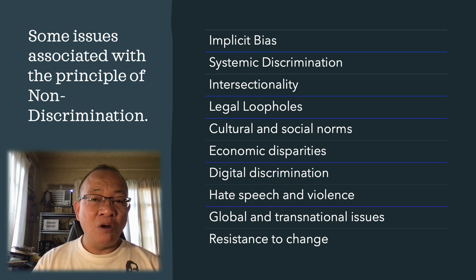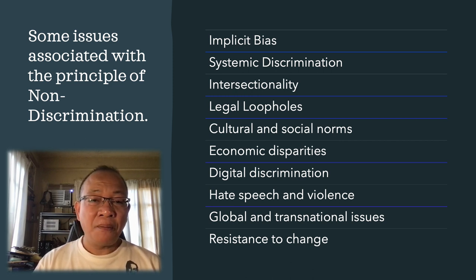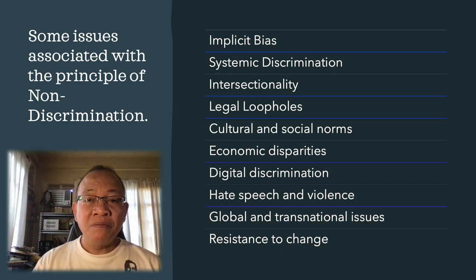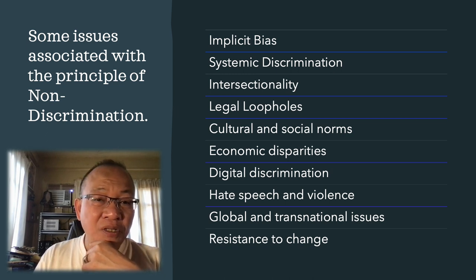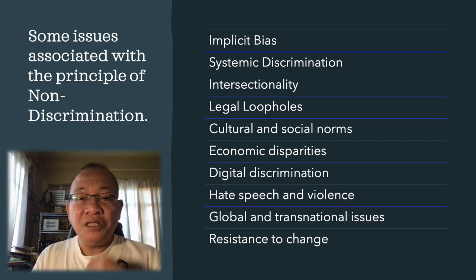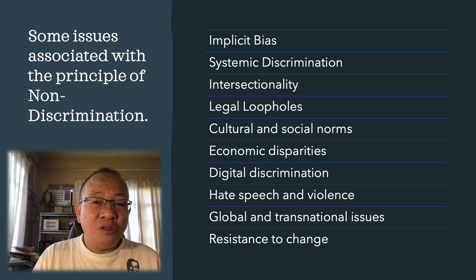Number nine, we have global transnational issues. Discrimination is not confined to national boundaries and can occur on a global scale. Issues such as xenophobia, racism, and religious intolerance can have international ramifications and require coordinated efforts to address effectively. And lastly, we have resistance to change. Overcoming discrimination often requires challenging entrenched power structures. Resistance to change from those who benefit from existing systems of privilege can pose significant obstacles. Addressing these issues requires a multi-faceted approach involving legal protections, social awareness, education, institutional reforms, and advocacy efforts aimed at promoting equality and inclusivity.